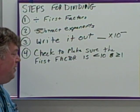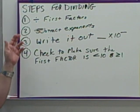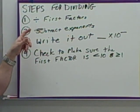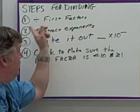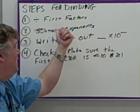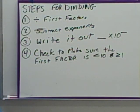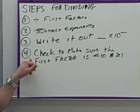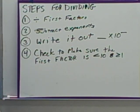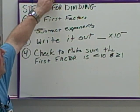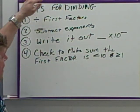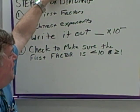Rules for dividing in a slightly compact form here is divide the first factors, subtract the exponents, write it out as step 1 times 10 to the step 2, the exponent there. Step 4 is check to make sure the first factor is less than 10 and greater than or equal to 1. So after that, that is the check. We've seen how to do that.